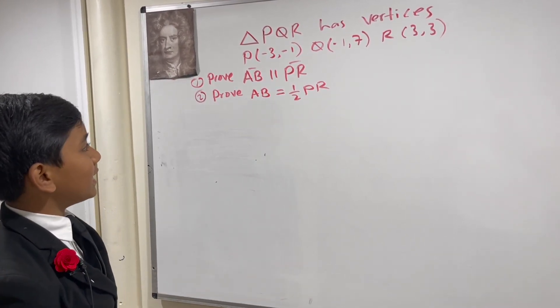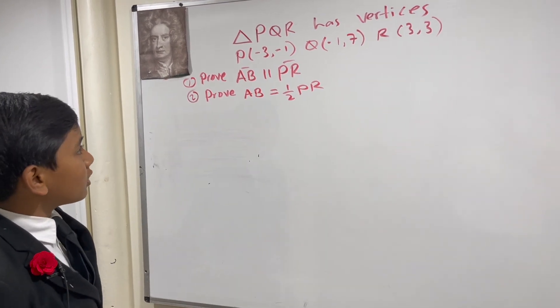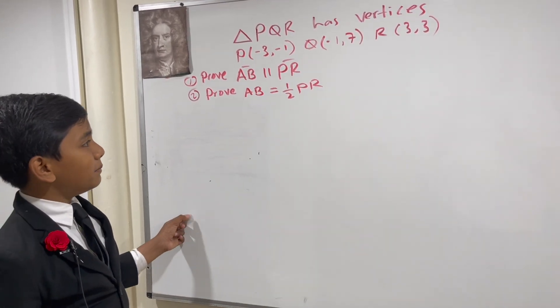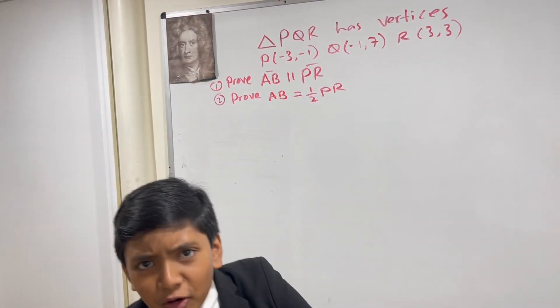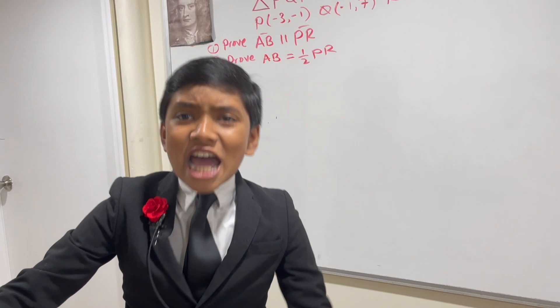Number 1, prove AB is parallel to PR. And number 2, prove AB is one half of PR. Wait, AB? First of all, you don't know what PQR is, and now AB?